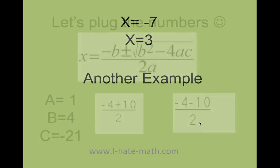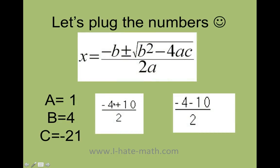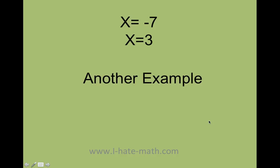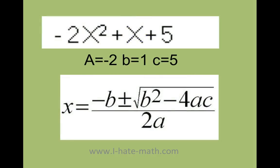I'm going to have negative 4 plus 10 is going to be 6. 6 divided by 2 is 3. Negative 4 minus 10 is negative 14 divided by 2, which is negative 7. And that's it. How easy is that? Let's go ahead and do another example.